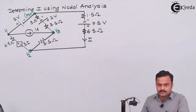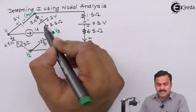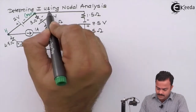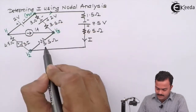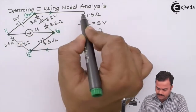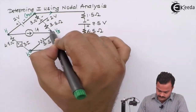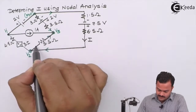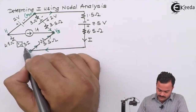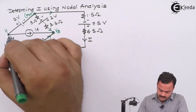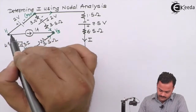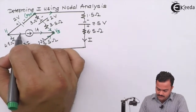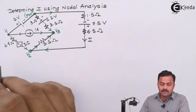The next step is to mark all branch currents. We can mark the branch currents randomly. I have marked the current for the first branch, then for the 5.5 ohm branch in this direction. For the branch where the current source is present, I will mark the current direction as per the source.